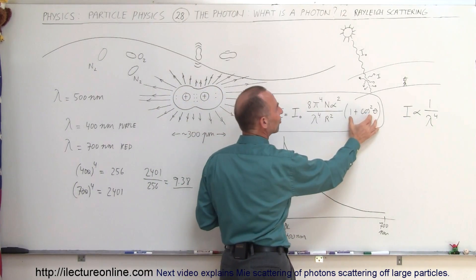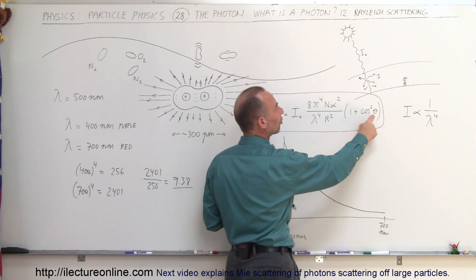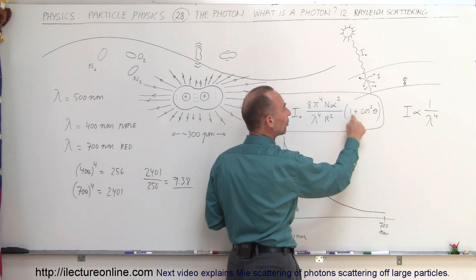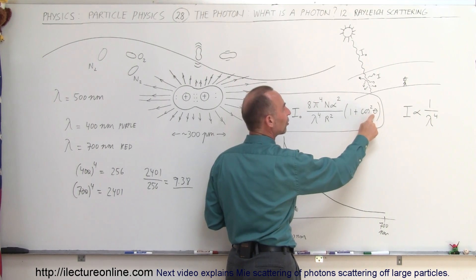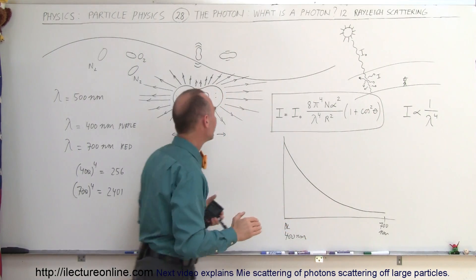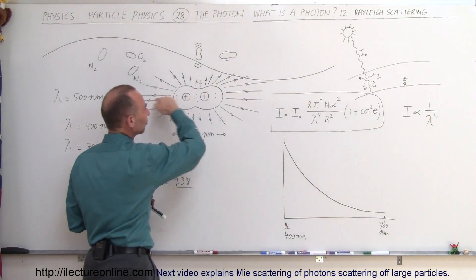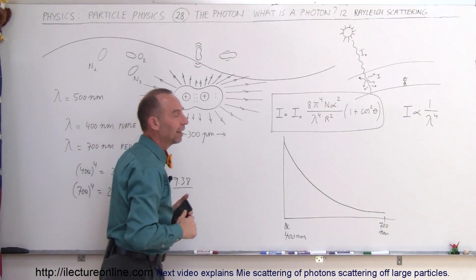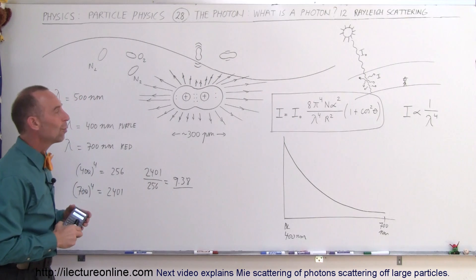And finally we have the scattering angle theta right here. Notice that when theta is equal to 90 degrees, cosine of theta goes to 0, you have a 1 there. If it's either 0 or 180, you get cosine of that is equal to 1, so you get 1 plus 1 equals 2, which means that the scattering in this direction is about twice as much as the scattering in this direction. And so that's by definition Rayleigh scattering.